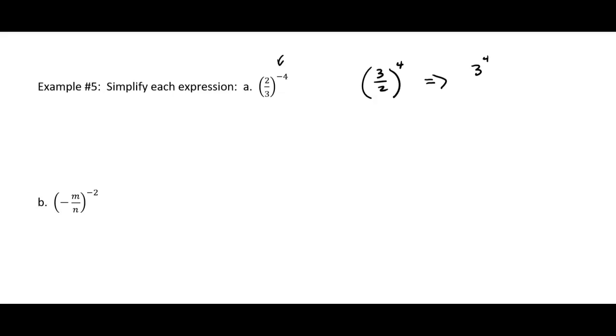to the fourth power over 2 to the fourth power. I don't know that we've had that rule yet. You wouldn't have to do it that way. You could write 3 over 2 times 3 over 2 times 3